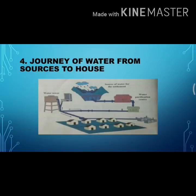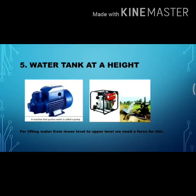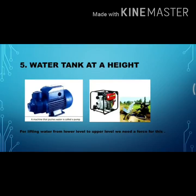Water always flows downward, so when we want to lift water from a lower level to a higher level, we need force. Pumps running on electricity or diesel are used for this. A pump is a machine that pushes water. Water is filled into tanks built at height, also called water towers. From the treatment plant, water comes to the tower, and from the tower it is distributed to houses through pipes across different parts of towns and cities.